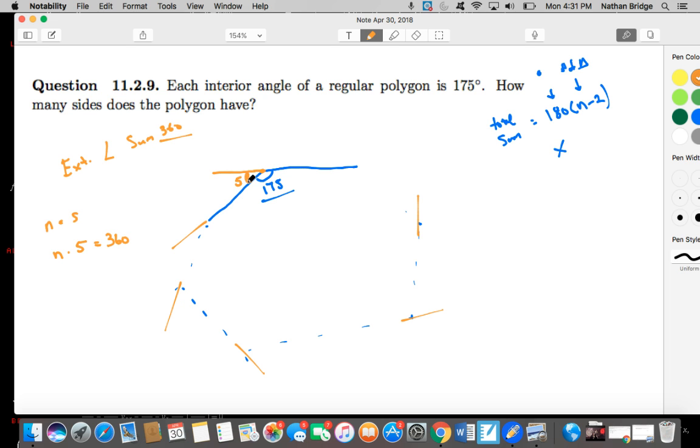See how that works? This would be 5, this would be 5, this would be 5. Each one of these vertices right here would have a corresponding side. So if we know that each of these exterior angles are 5 and they add up to 360, then the number of vertices times 5 is equal to 360.